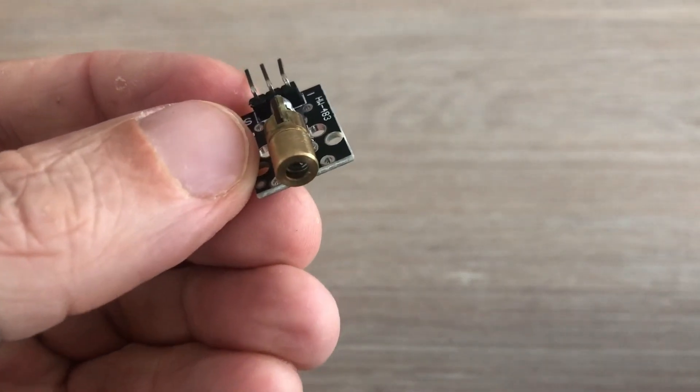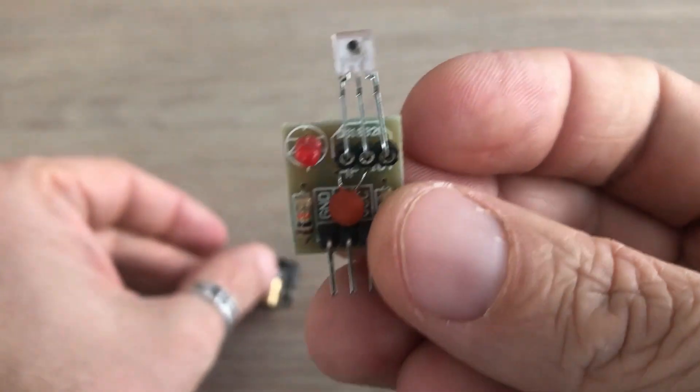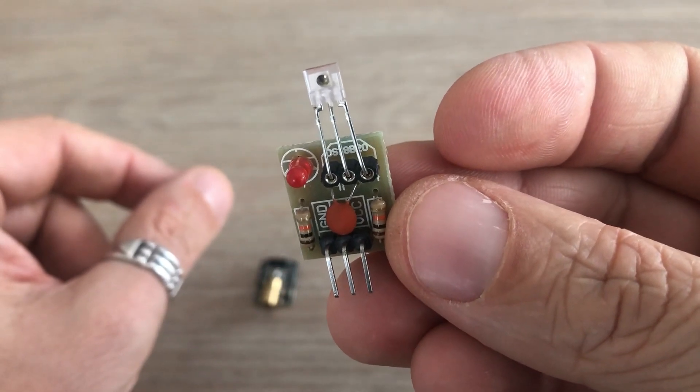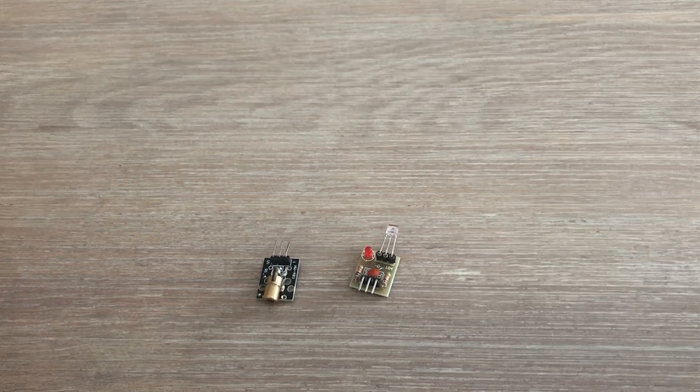So here are the modules we'll use in this project: laser transmitter and laser receiver. Before we have a closer look at those two modules, a little bit of history how we got here and why I want to use these modules for morse code transmission.